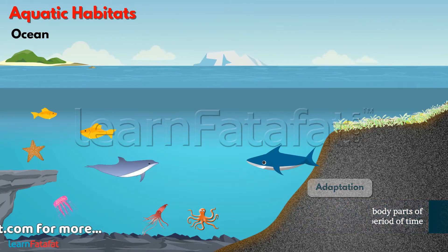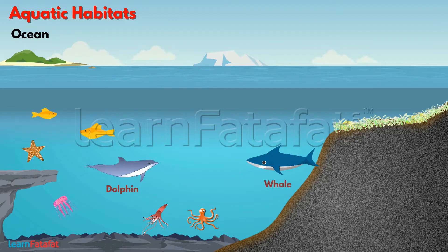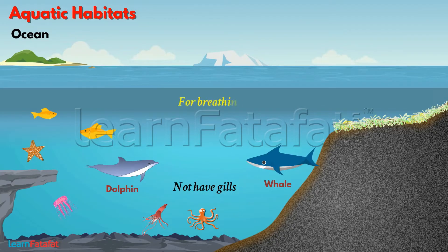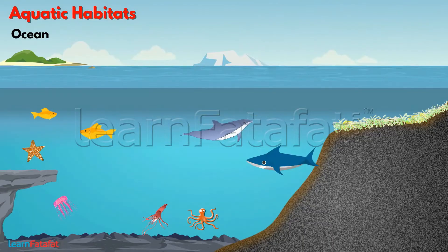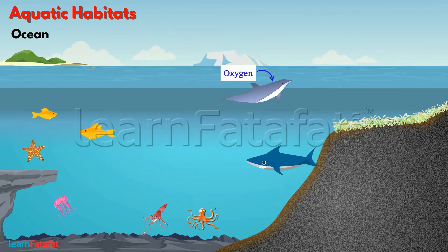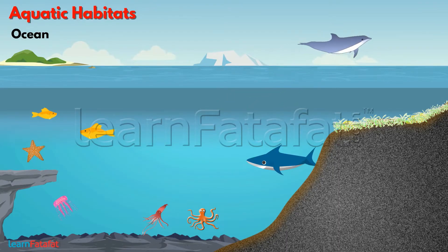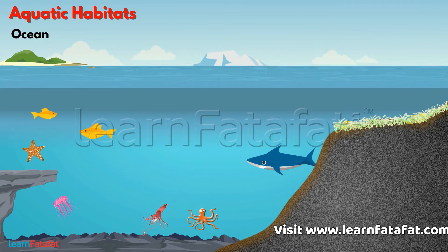Some animals such as dolphins and whales do not have gills. For breathing, they have nostrils or blowholes located on their upper body parts. They come to the surface of the water for obtaining oxygen. They store as much oxygen as they can and then dive deep in the sea, using the stored oxygen for a long time.